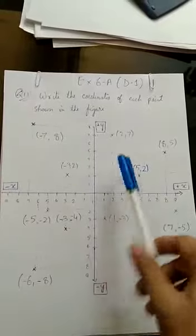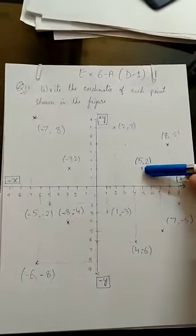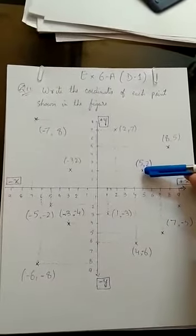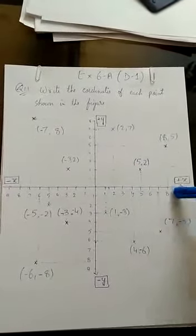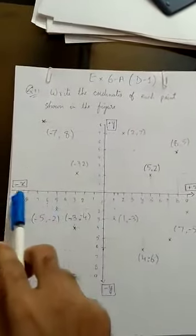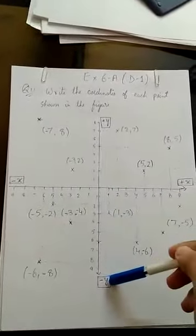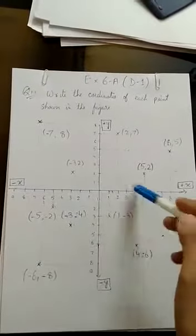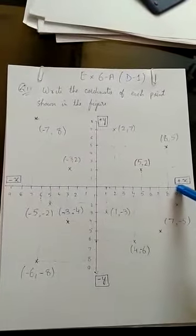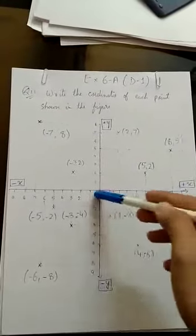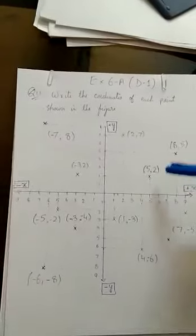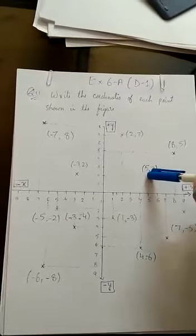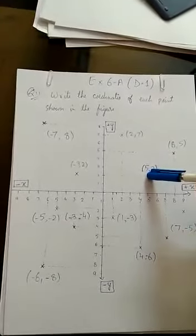Let's take an example point. As we know, the positive X value is to the right, the positive Y value is upward, the negative X value is to the left, and the negative Y value is downward. So these are the four quadrant directions. In this direction the X value is positive, and in this direction the value of Y is positive.